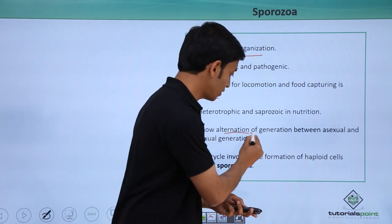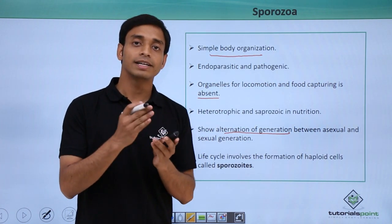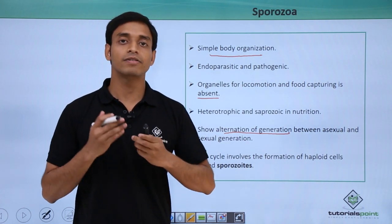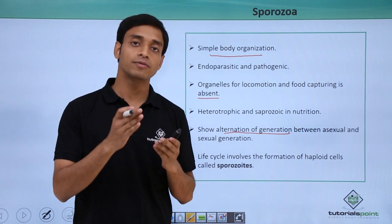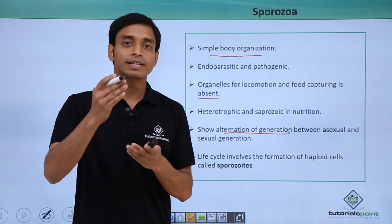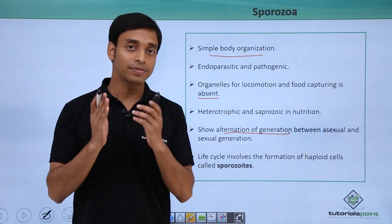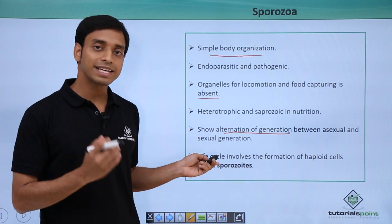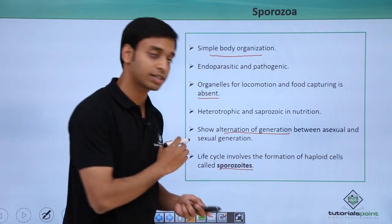A very important characteristic is that Sporozoa can show alternation of generations. They can alternate their reproductive capability: initially they start reproduction through the asexual mode, then the next phase is the sexual mode, and then again it returns to the asexual mode. Every time they reproduce, they alternate between sexual and asexual modes, and this phenomenon is termed alternation of generations.